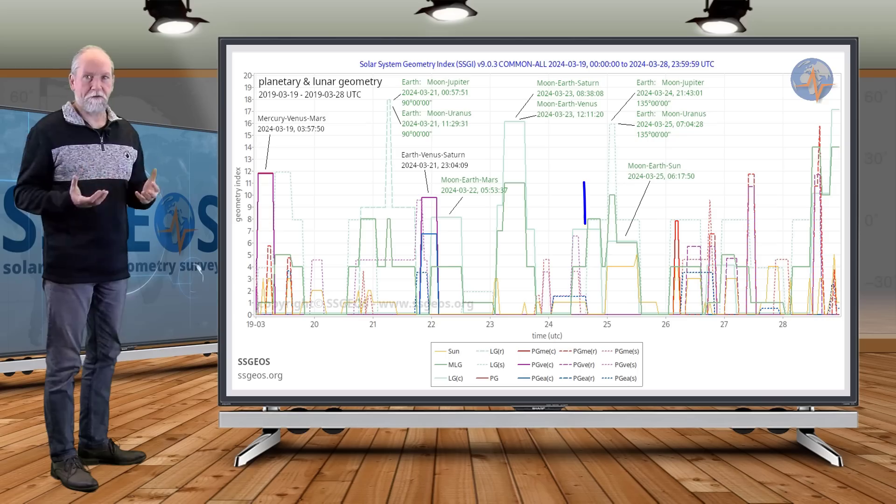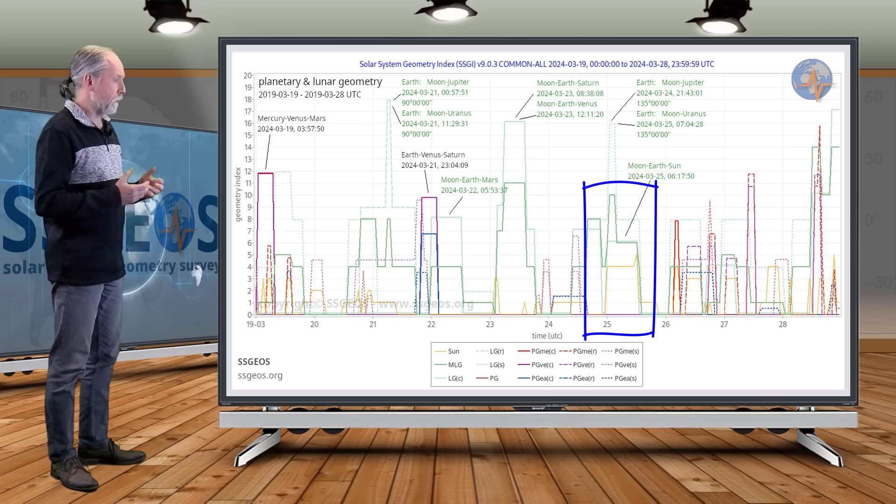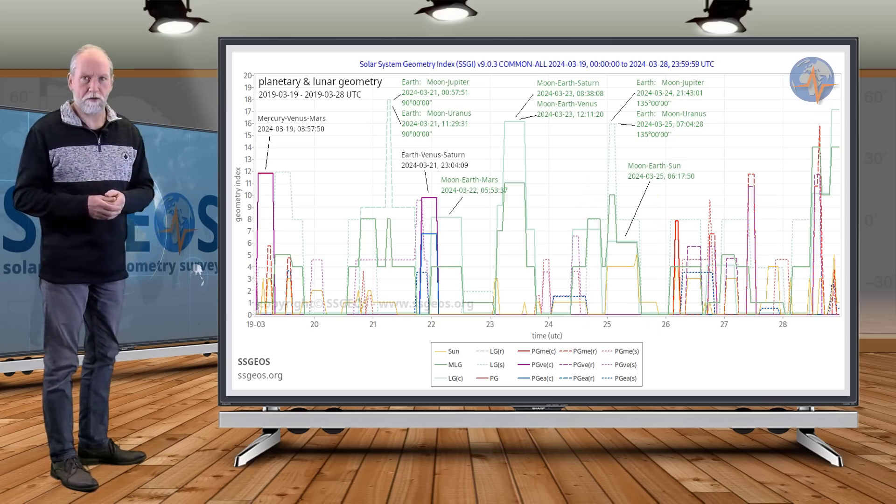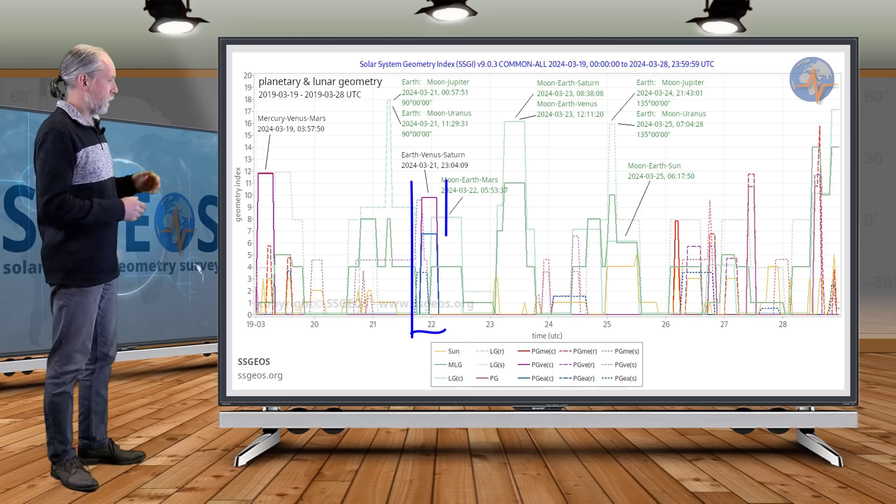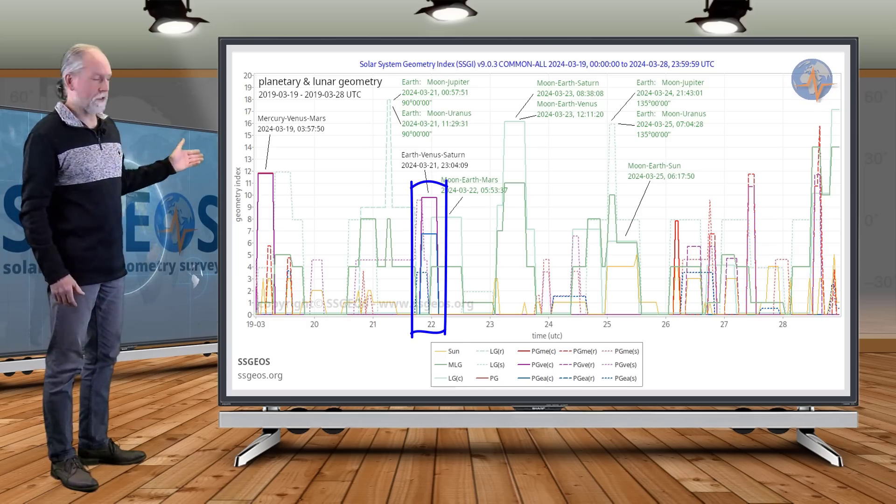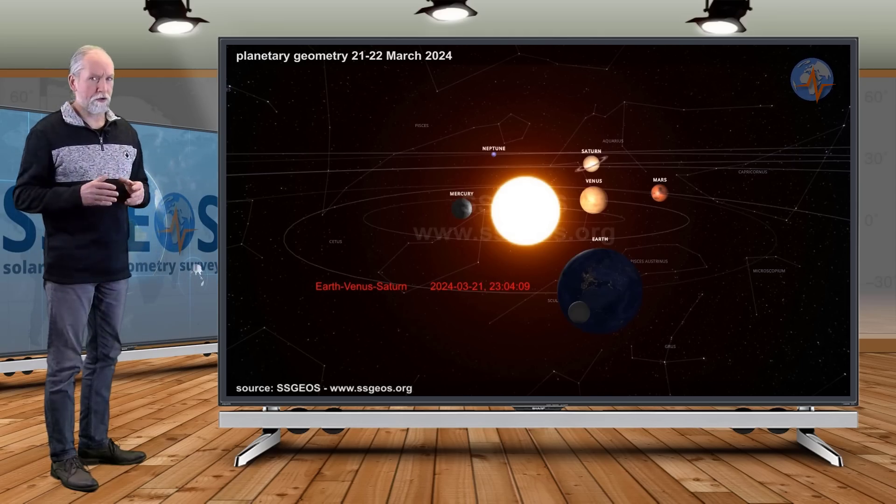And then on the 25th we have a full moon and also a higher lunar peak, but again they involve Jupiter and Uranus and I don't expect that to be too critical. We also have a planetary conjunction Earth-Venus-Saturn that is on the 21st-22nd, on itself also not critical.